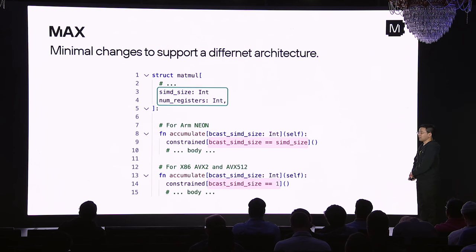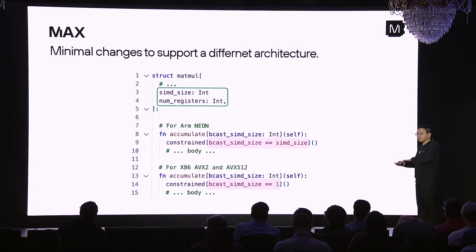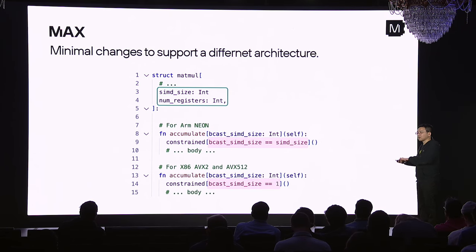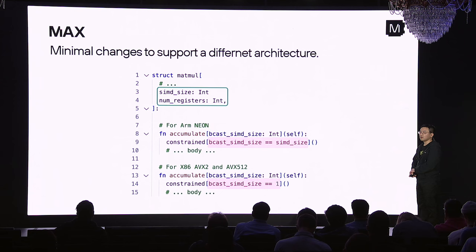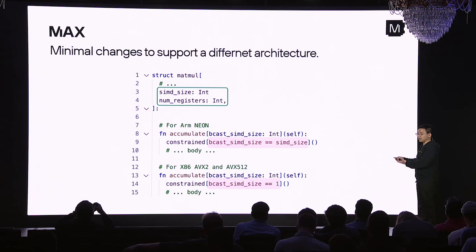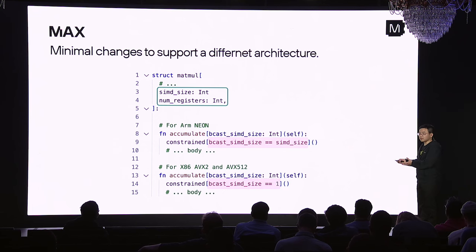What about a different architecture like an ARM CPU, which is very different from x86? Again, thinking at the algorithm level, the core difference is actually just one thing: how you broadcast from a single value into a SIMD register. We can express this with Mojo by adding a parameter to our function, and add another function to take advantage of the more efficient broadcast with NEON. Supporting a new architecture requires only very minor code changes in the same API and the same high-level programming language.